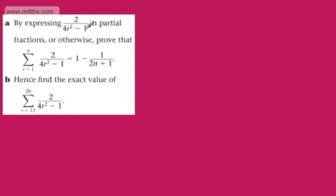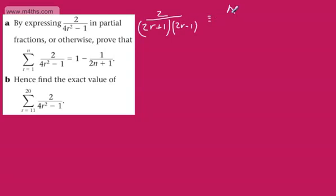So let's start with partial fractions. We should be recognising that that's a difference of two squares, so we can write this as 2 over 2r plus 1 multiplied by 2r minus 1. We will now have an identity and put this as A over 2r plus 1, add to it B over 2r minus 1, or otherwise.